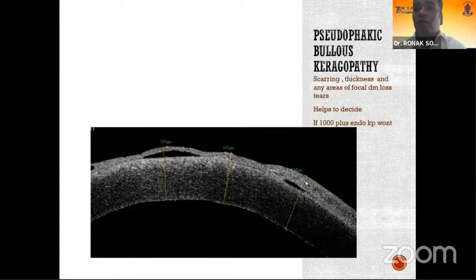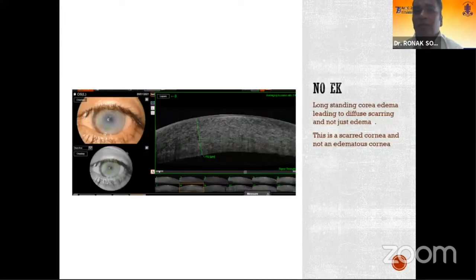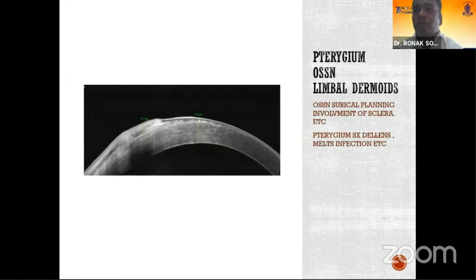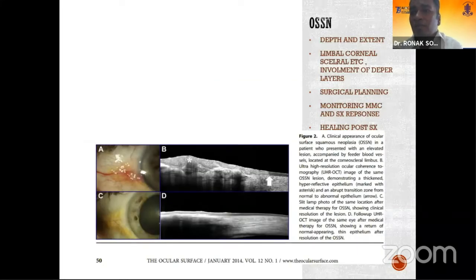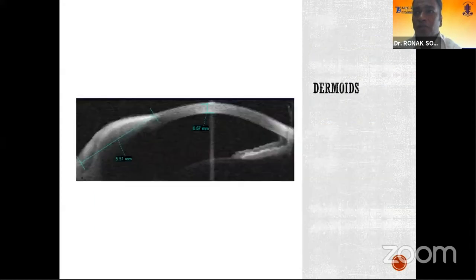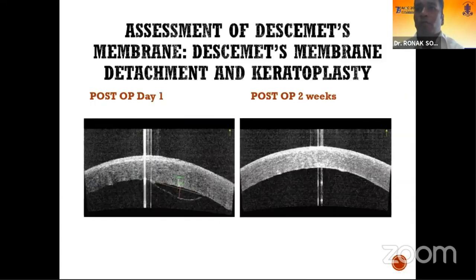In pseudophakic bullous keratopathy, you can check for scarring thickness and areas of focal DM loss or tear, helping you decide what keratoplasty to perform or whether to stay on conservative management. A pachymetry of 1000 microns won't help in endothelial keratoplasty. For pterygium, OSSN, and limbal dermoids, you can assess surface regularity and epithelialization. In OSSN, there is a specific sign of hyperreflective epithelium with an abrupt transition zone from normal to abnormal epithelium. Pre and post-treatment photographs show treatment response to medical management with interferons, and dermoid extent and deeper involvement can also be assessed.